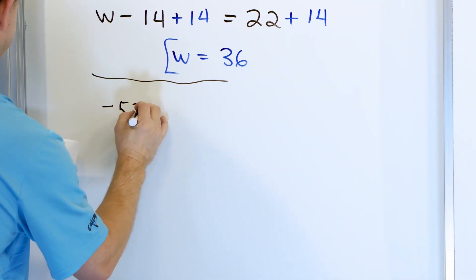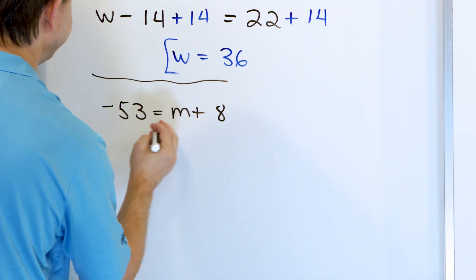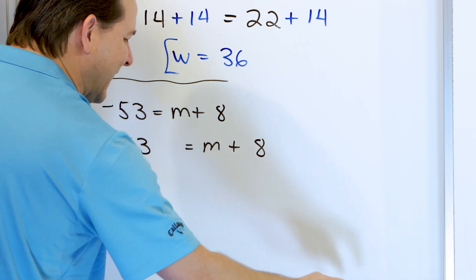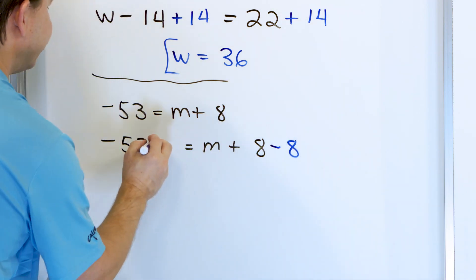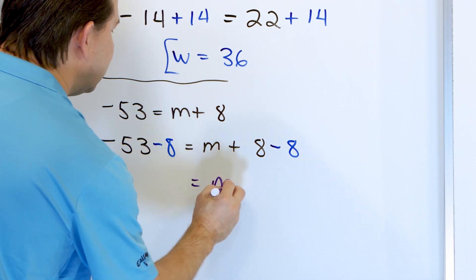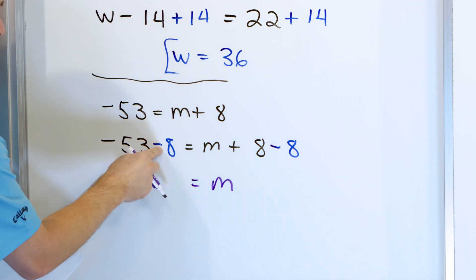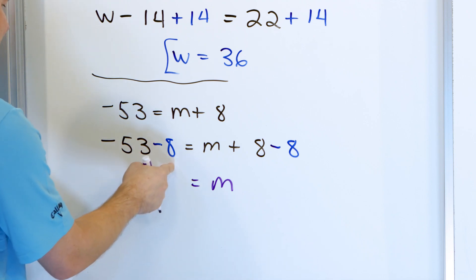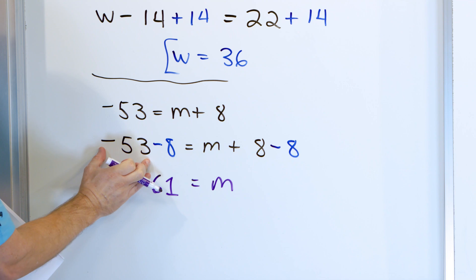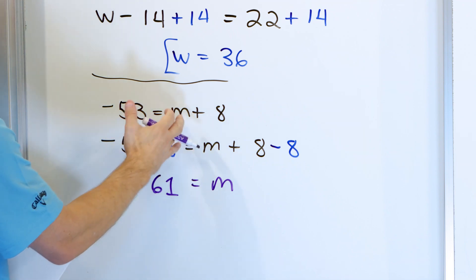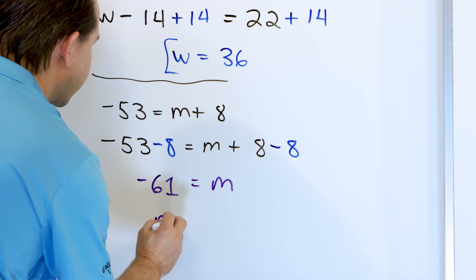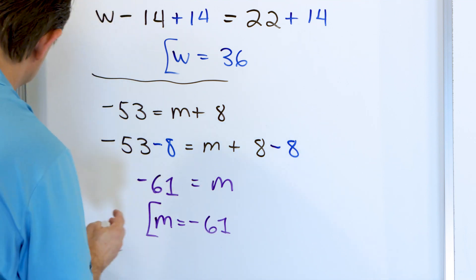Final problem: negative 53 equals m plus 8. We're adding 8, so we undo it by subtracting 8 from both sides. 8 minus 8 is 0, leaving just m. And here we have negative 53 minus 8 — so 53 plus 8 is 61, and it has to be negative 61. Think of it as owing $53 and then subtracting 8 more dollars means you owe a total of $61. So m equals negative 61.